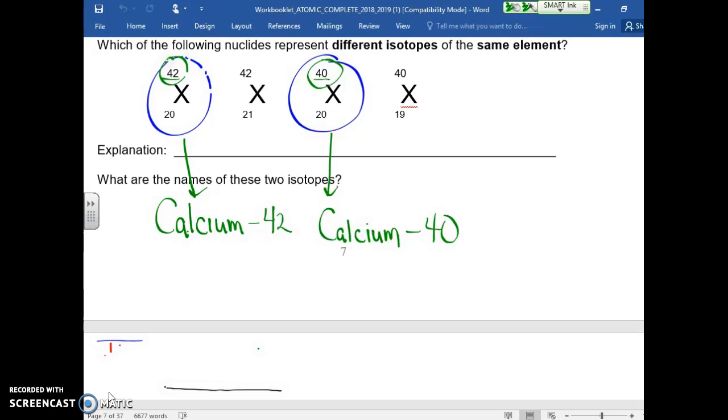So the first isotope is called calcium-42, and the second isotope is called calcium-40. I can also ask questions about, for example, how many neutrons are in each one of these?